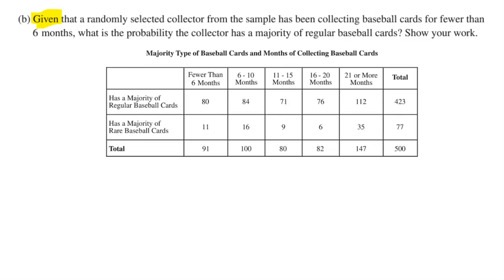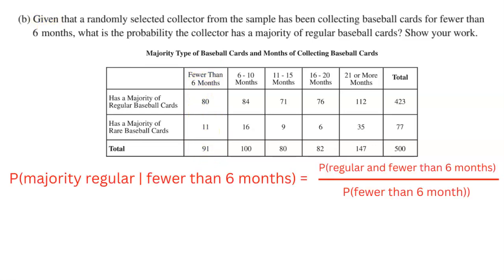The next question is a conditional probability because we see the word 'given.' Given that a randomly selected collector from the sample has been collecting baseball cards for fewer than six months, that means we're only allowed to look at that column because we're given that condition — they've been collecting fewer than six months, so we can't look anywhere else. Given that condition, what's the probability that the collector has a majority of regular baseball cards? We'll find the probability that the majority of their collection is regular, given fewer than six months of collecting.